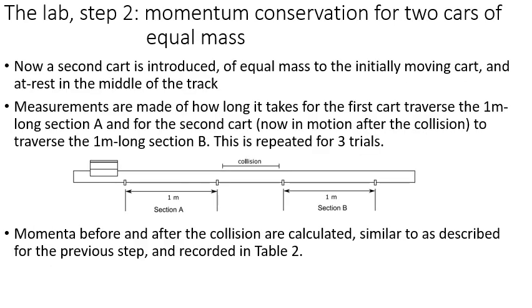So then the next step is we now are going to do a collision. So we're going to add a second cart onto the track. We're going to put it right here in the center of the track, and this cart will have the same mass as the initially moving one. And so what's happening here is this cart's going to move. Someone's going to time how long it takes for the cart to traverse this distance, section A, the initially moving cart. And then a collision is going to happen and we're going to measure how long it takes for the initially not moving cart to then traverse this distance over here.